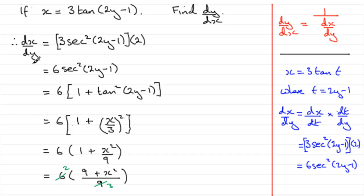But remember, this is dx dy. And what we want is dy dx. So, all we've got to do now is use this principle here, that dy by dx is 1 over dx dy, which really means that we just need to turn this upside down. So, therefore, dy by dx equals 3 all over 2 bracket 9 plus x squared. And there you have it.